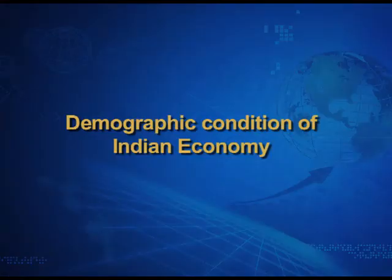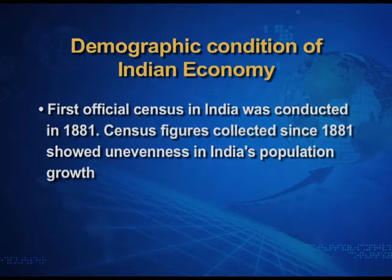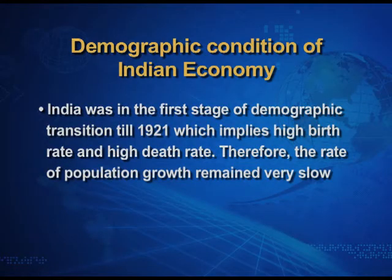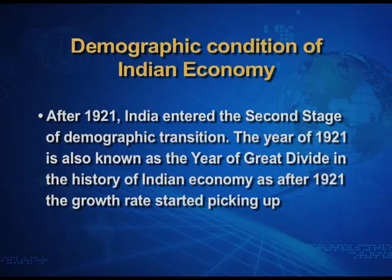Demographic condition means the quality of population, which can be seen with the help of qualitative indicators like literacy rate, etc. The first official census in India was conducted in 1881. Census figures collected since 1881 showed unevenness in India's population growth. India was in the first stage of demographic transition till 1921, which implies high birth rate and high death rate. Therefore, the rate of population growth remained very slow. After 1921, India entered the second stage of demographic transition. The year 1921 is thus known as the year of great divide in the history of Indian economy.